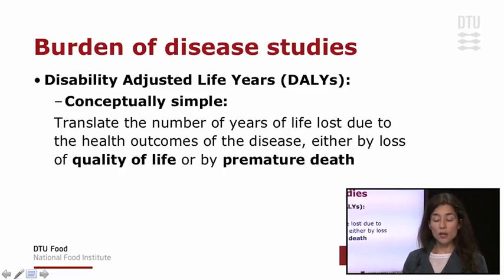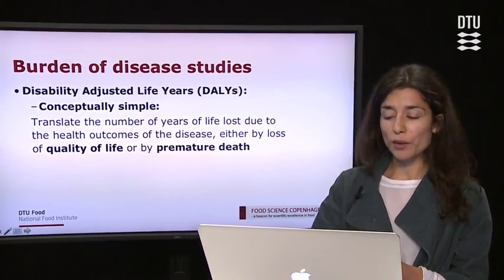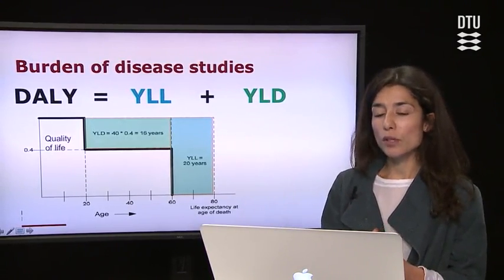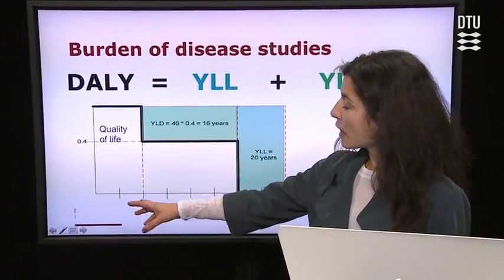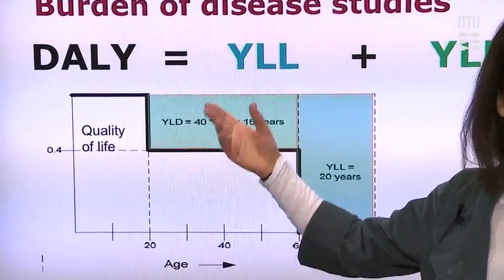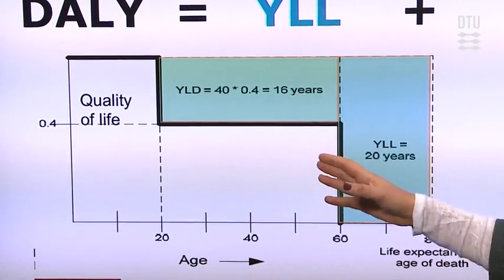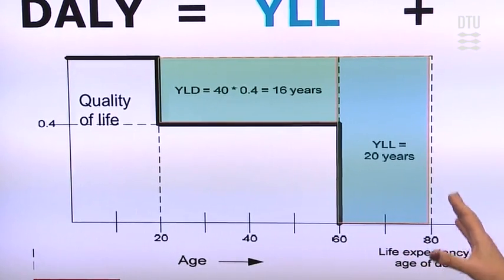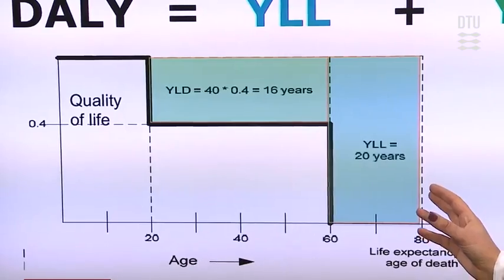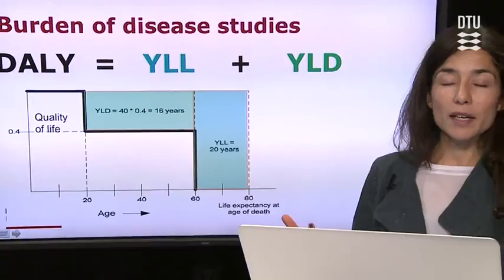What are DALYs? It is actually a simple concept. They translate the number of years of life lost due to all health outcomes of a disease, either by loss of quality of life or by premature death. In a visualization, imagine an individual born in a perfect state of quality of life who lives like this for 20 years, when a disease or injury leads to a 40% reduction of quality of life, and the individual lives like this for the next 40 years before a premature death. Compared to life expectancy, there are 20 years of life lost due to premature death. Summing this with the calculated years of life lost due to decreased quality of life, we can estimate DALYs.